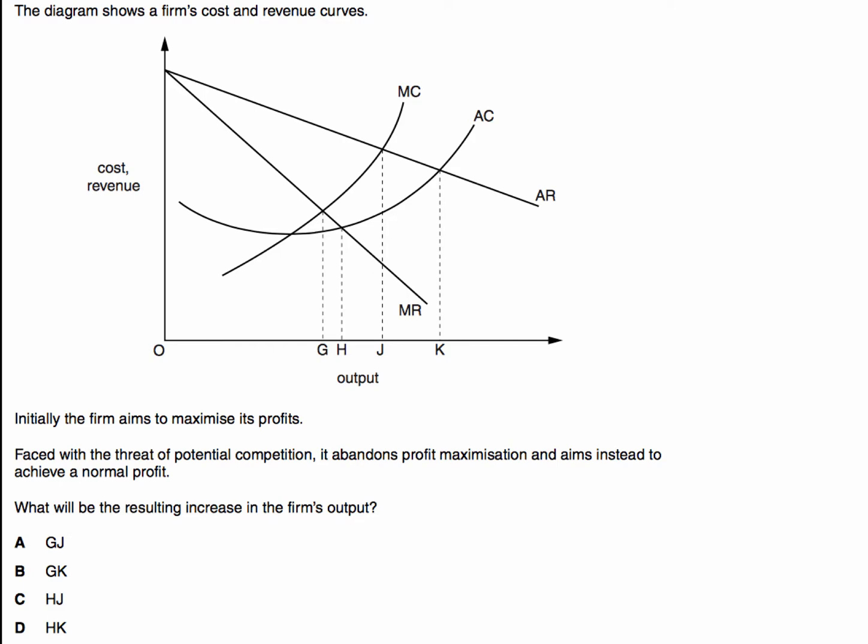Initially the business aims to maximize its profits. Faced with the threat of potential competition, that suggests here we're talking about a contestable market, doesn't it? Faced with the threat of potential competition, it abandons profit maximization and aims instead to achieve a normal profit. And the question: what will be the resulting increase in the firm's output? Here's your chance to have a go, press that pause button.